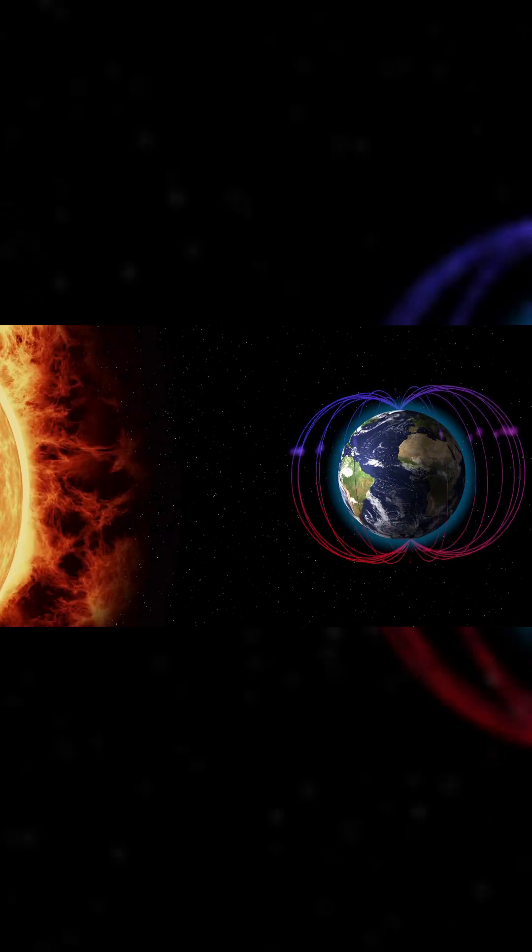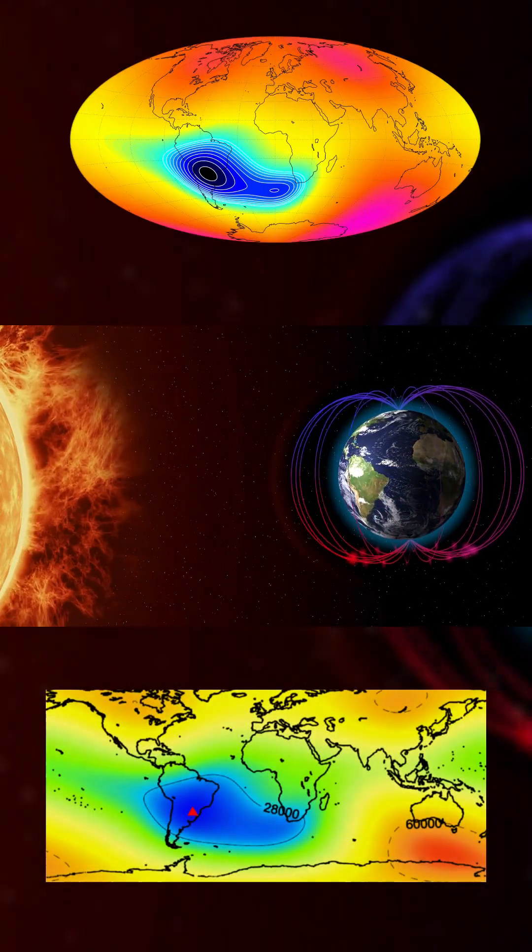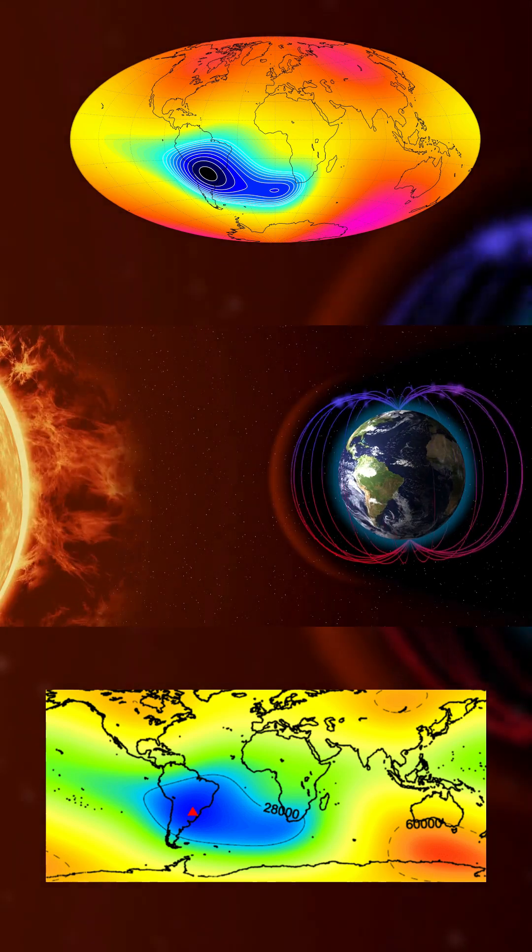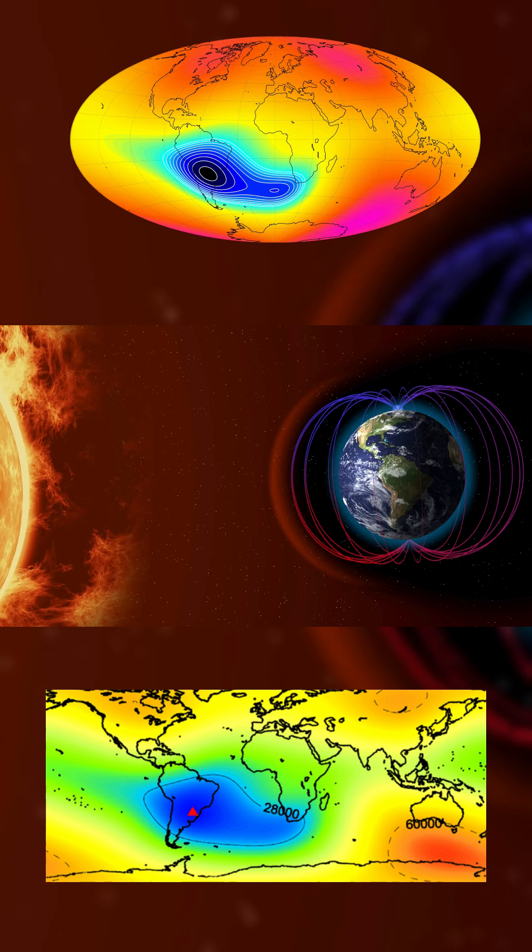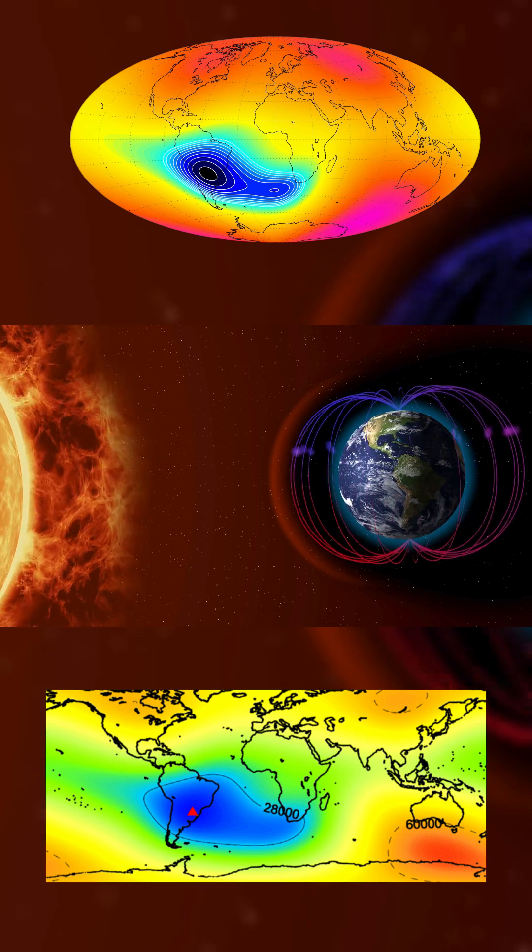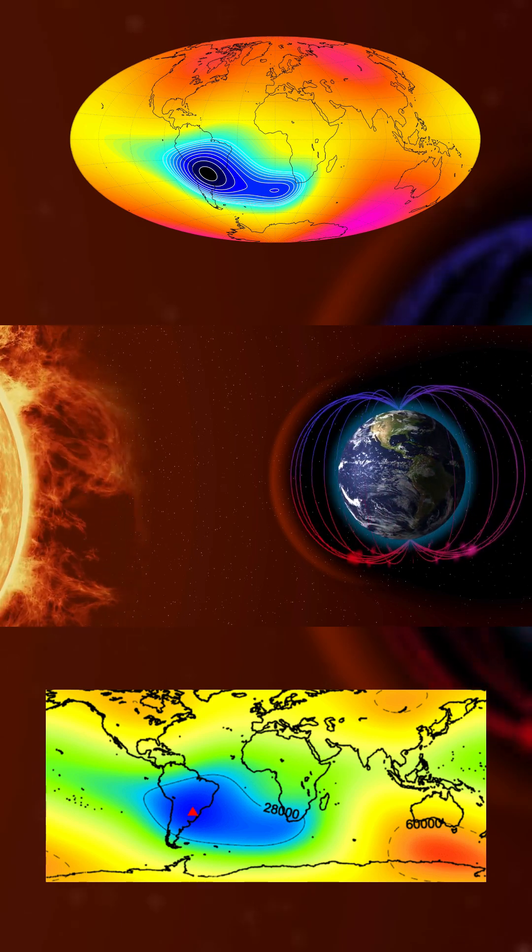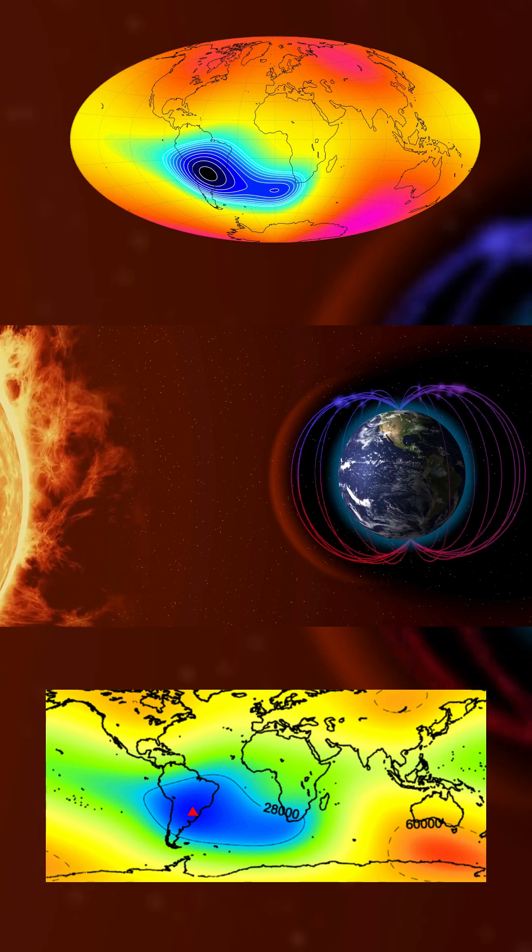A vast disturbance in Earth's magnetic field, known as the South Atlantic Anomaly, looms over South America and the Southern Atlantic Ocean. This mysterious region weakens the planet's magnetic shield, exposing satellites to heightened radiation that disrupts their operations.